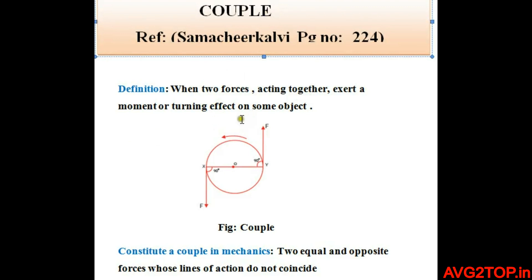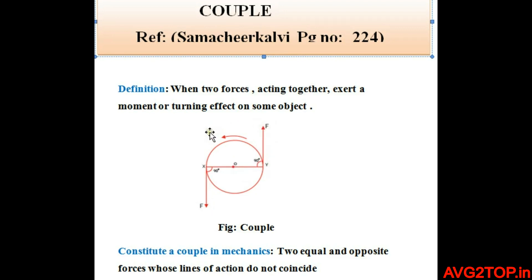For example, suppose two strings are tied to a wheel at points X and Y, and two equal and opposite forces F are exerted tangentially to the wheel. If the wheel is pivoted at its centre O, it tends to rotate about O in an anti-clockwise direction. So, two equal and opposite forces whose lines of action do not coincide are known as a couple in mechanics.